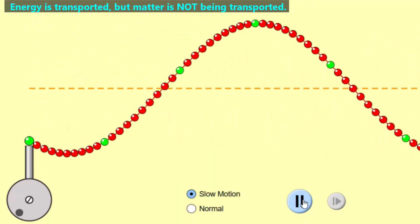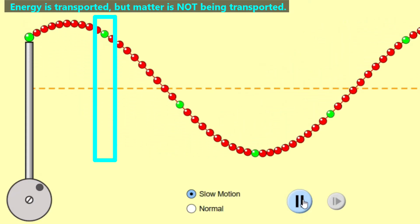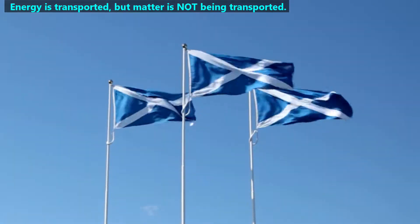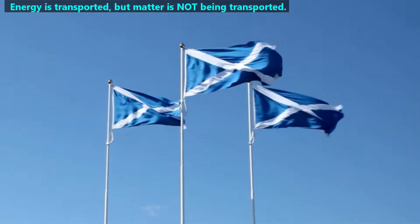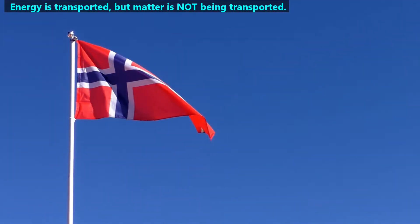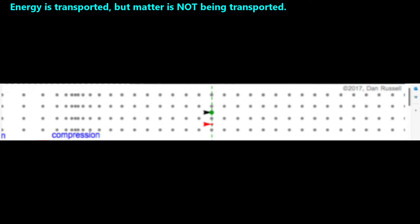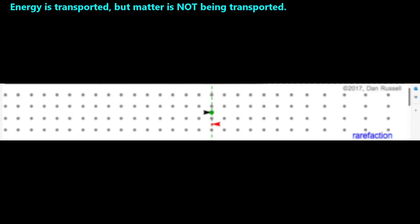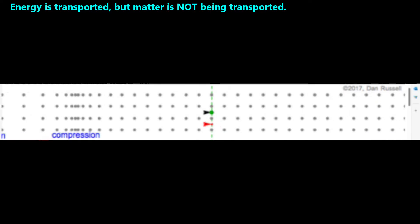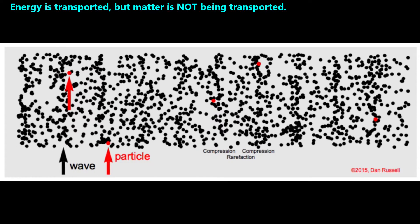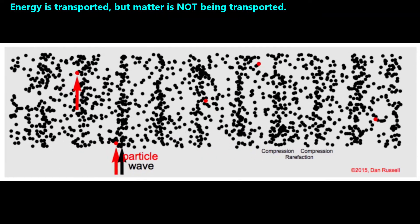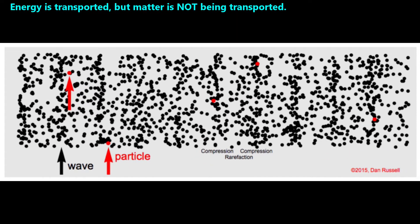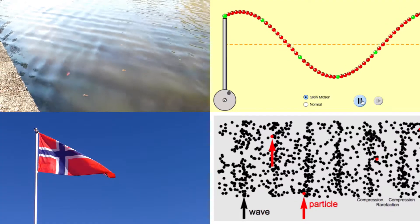Here's a wave on a string. If you focus on just one green bead, you'll notice that although the wave is propagating towards the right, the bead only goes up and down. We see this same thing when transverse waves travel through a flag — the waves propagate away from the flagpole, but the flag never leaves the pole. In an animation of molecules in air as sound waves travel through them as longitudinal waves, we can see compression followed by rarefaction, but each red molecule is only oscillating a short distance back and forth, and none are being transported with the wave.